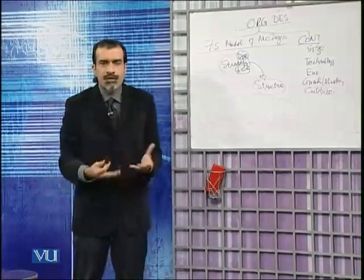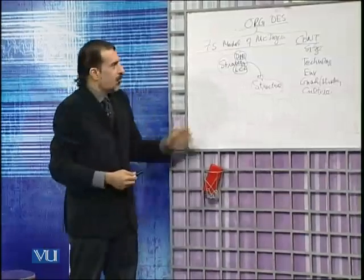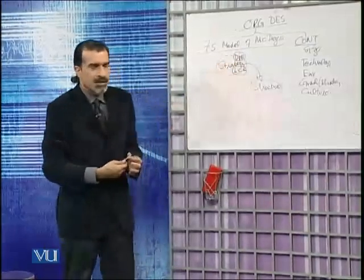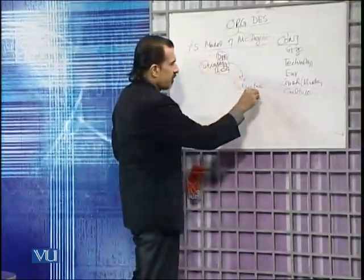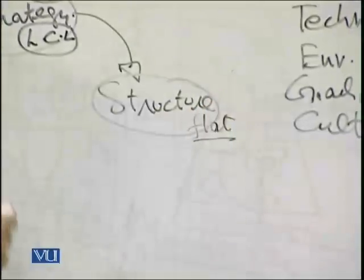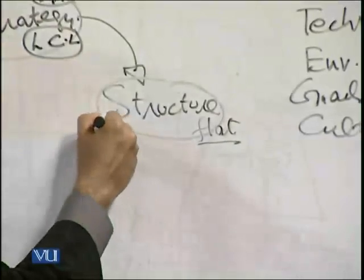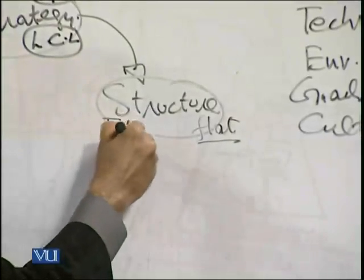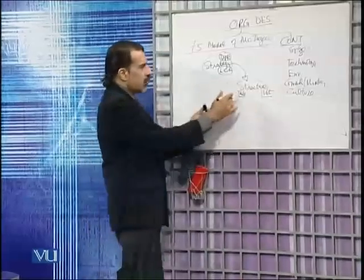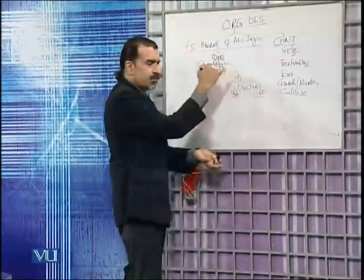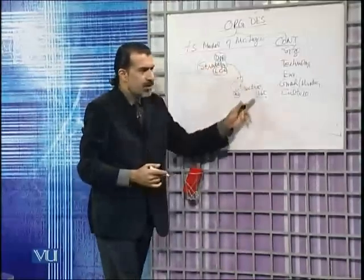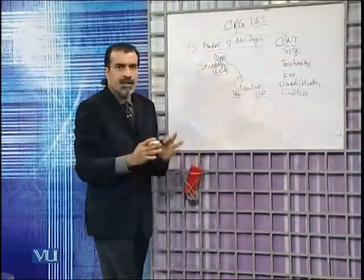After strategy comes structure, and after structure comes systems — the systems inside the company, like HR systems, personnel systems, IT systems, and financial systems. Again, if the structure is flat and strategy is differentiation, the systems will differ. If there is low cost leadership with a taller structure, then the entire emphasis of systems will be on bureaucracy. In the differentiation case, the system's emphasis will be on innovation and knowledge sharing.